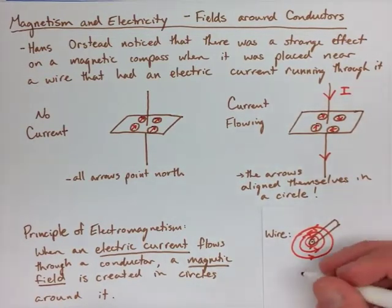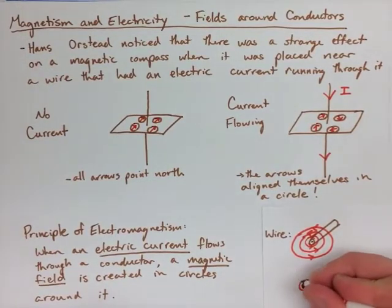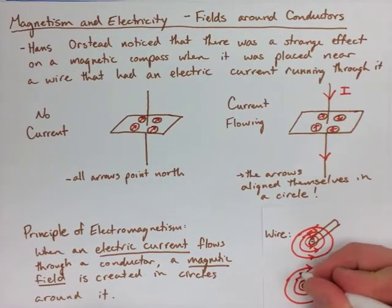If you put an X on the end of that wire, however, that means the current's going into the wire from that direction, and that's going to make a clockwise direction for the electric field.